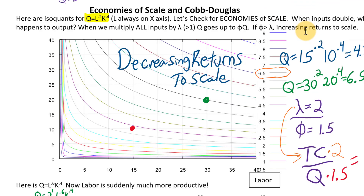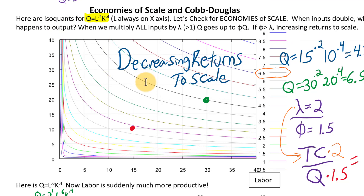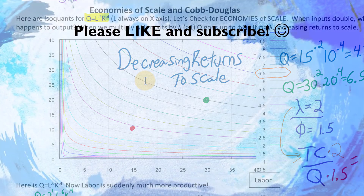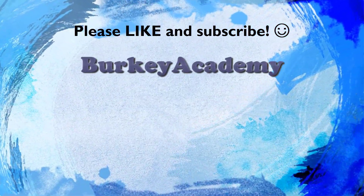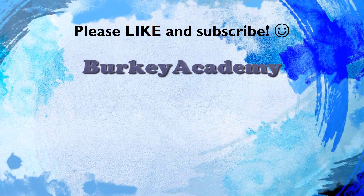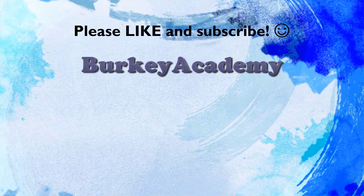Practice plugging in values into different production functions with different exponents to verify, so you can trust this rule and really understand what kinds of Cobb-Douglas production functions have increasing, decreasing, or constant returns to scale. This is Dr. Berkey signing out. If you have any questions, please let me know. Have a great day and best of luck in your studies.